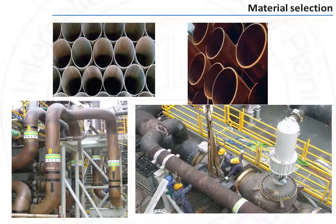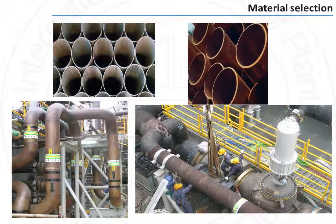The selection of the material of construction depends on the type of fluid handled, its corrosiveness, its pressure, and its temperature. Looking first at pressure, the pressure of the carried fluid will induce the strength requirement of the material of construction. For high pressure, high strength material will be selected to reduce the wall thickness.